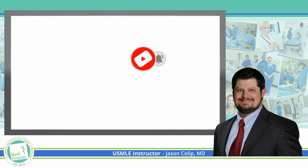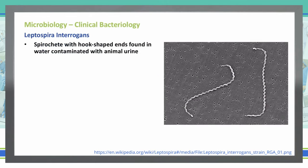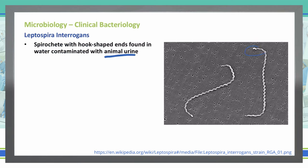Continuing on, discussing more spirochetes: Leptospira interrogans is a spirochete with hook-shaped ends that we see in water contaminated with animal urine. As you can see on the right, this is an electron microscope view of this very small spirochete, and it has those hook-shaped ends at the end of the bacteria.